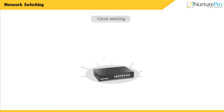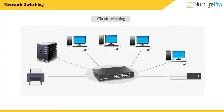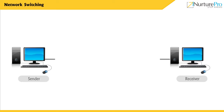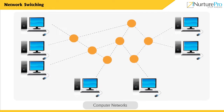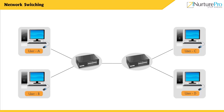Circuit switching is the most frequently used type of network switching. It uses a dedicated circuit to connect the sender and the receiver directly on an uninterrupted pathway. This pathway exists between the sender and the receiver until the connection is terminated by any of them. In computer networks, circuit switching between two communicating nodes eliminates the need for using headers which are frequent on the channel. The figure shows the circuit switching mechanism.